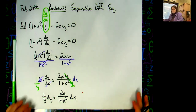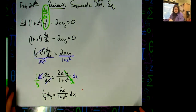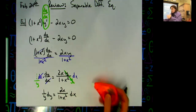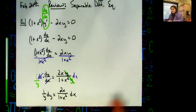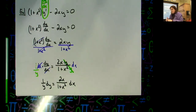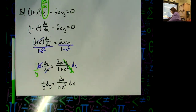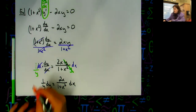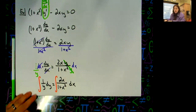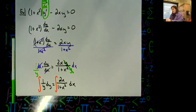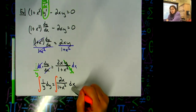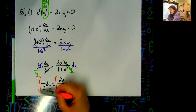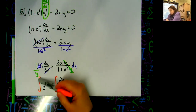Now the step that I keep seeing missing on quizzes: after separating the variables, you must clearly indicate that you are integrating both sides. You get points for separating, and on the AP test you also get points for clearly showing that integral sign on both sides before proceeding.